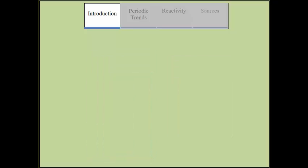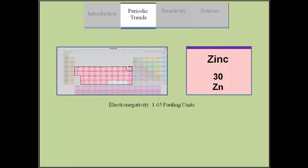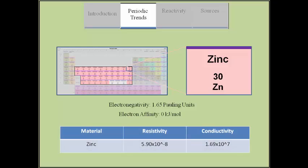Zinc is located in the upper right corner of transition metals. It has an electronegativity of 1.65 in Pauling units and an electron affinity of 0 kJ per mole. Zinc is a poor electrical conductor.